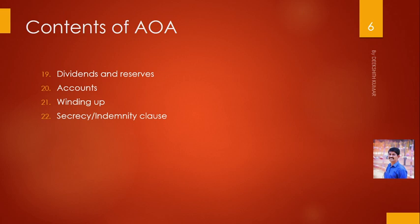Like memorandum of association, there is no specific fixed format for articles of association. Memorandum has specific clauses like name clause, object clause, registered office clause, etc. But in articles of association, there is no such fixed format. However, commonly, if a company has articles of association, what they should generally contain is shown here.